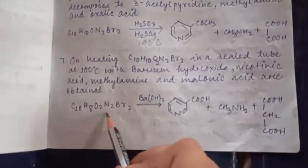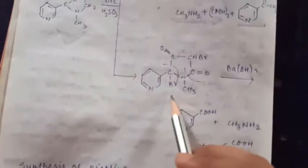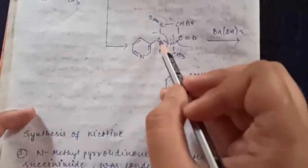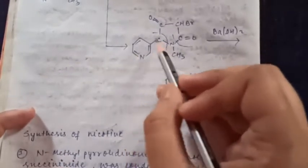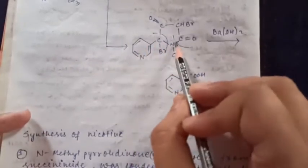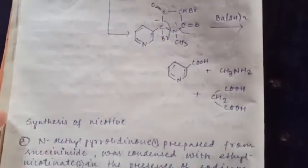And in this reaction we saw that when we treat nicotine with Br2 and sulfurous acid then another compound forms, that compound is C10H10O2N2Br2, which is this compound. When we treat this at 100 degree Celsius with BaO2, then this also divides into fragments. One of the fragments is pyridine, and with it this COOH will convert, so this will form nicotinic acid. This will form CH3NH2 methylamine, and this will form COOH, this will form CH2, and this COOH, so this will form malonic acid.